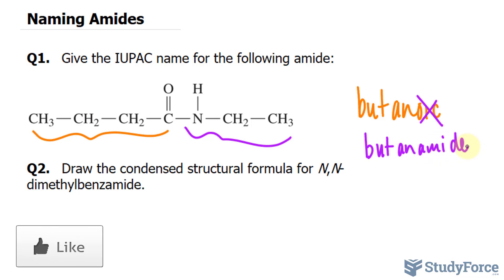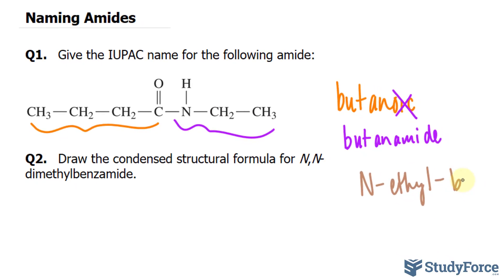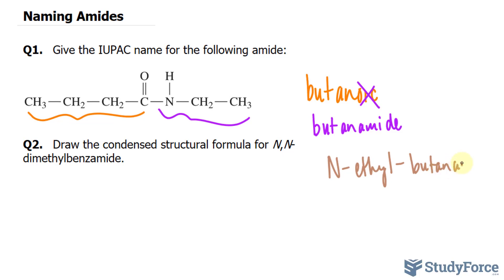The next step is to name the substituent on the nitrogen atom using the prefix N. The substituent is this alkyl group, specifically ethyl. So we'll say N-ethyl-butanamide. That's the IUPAC name for this molecule.